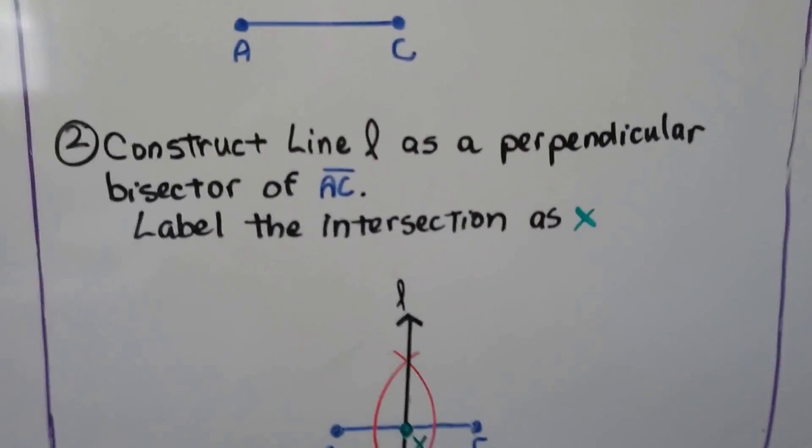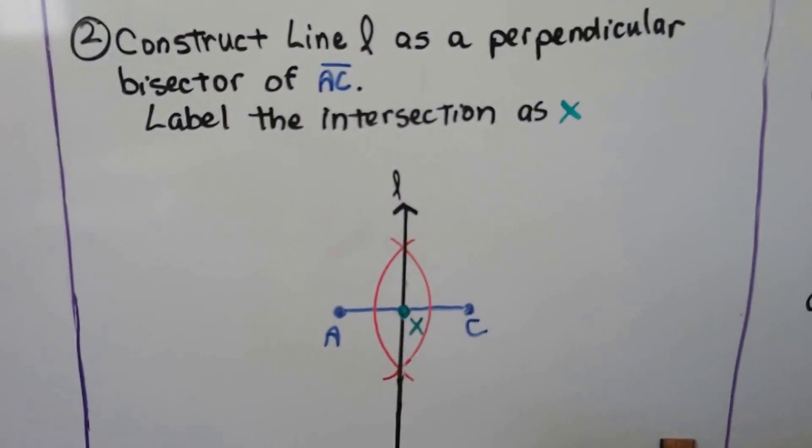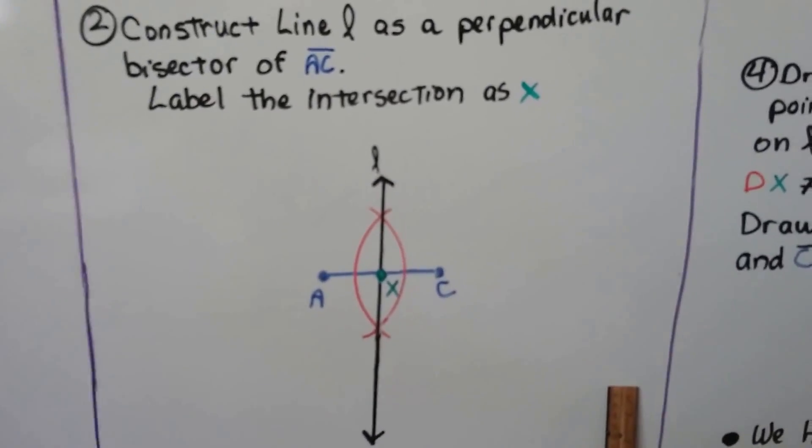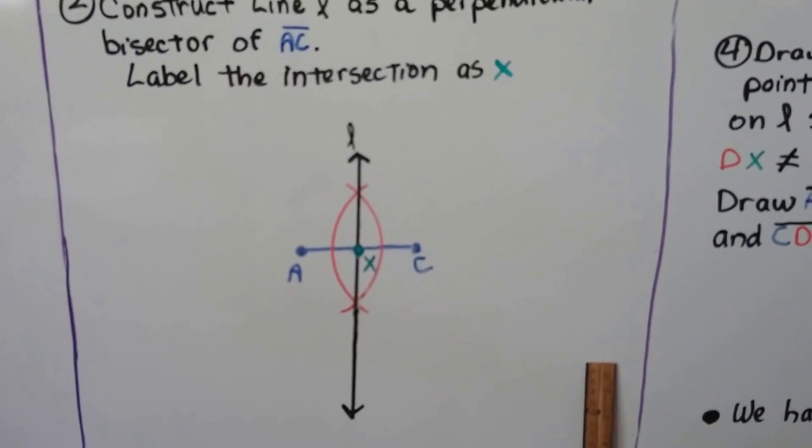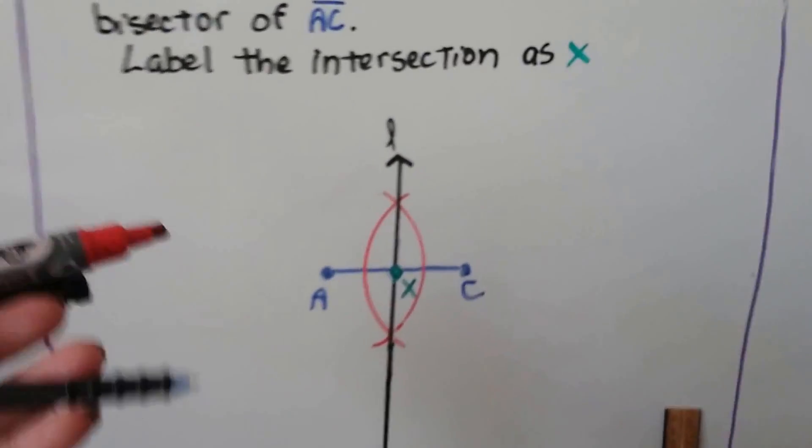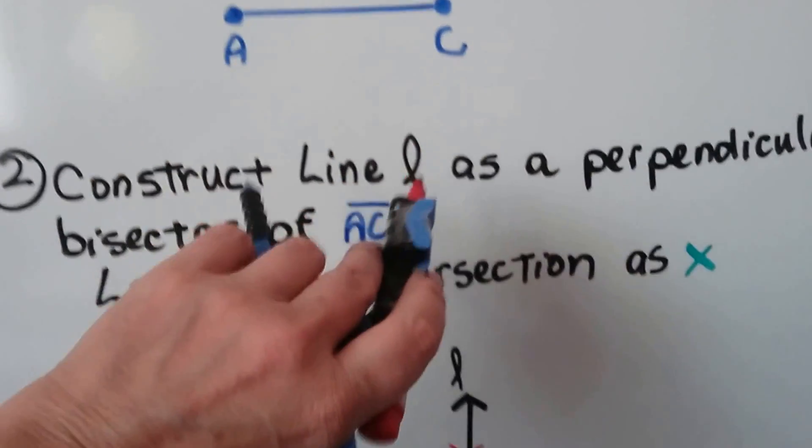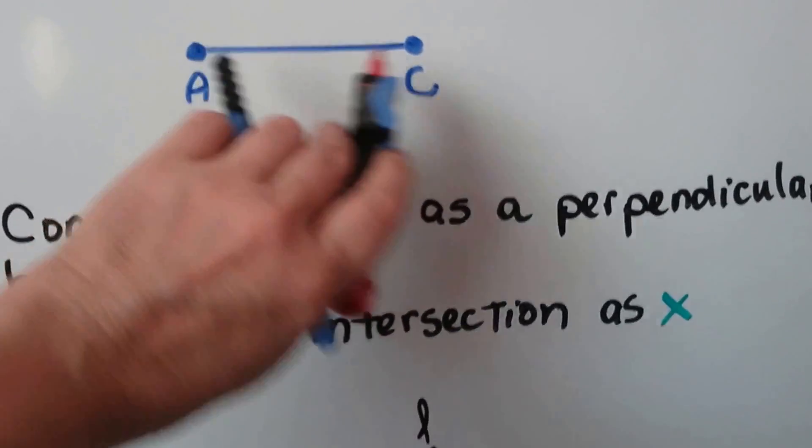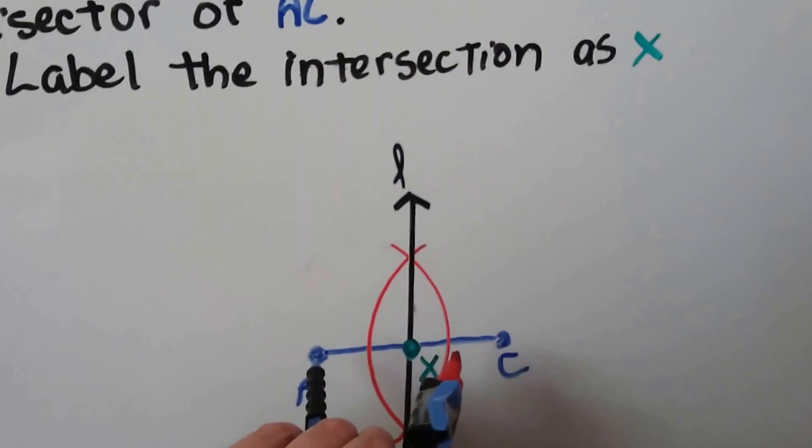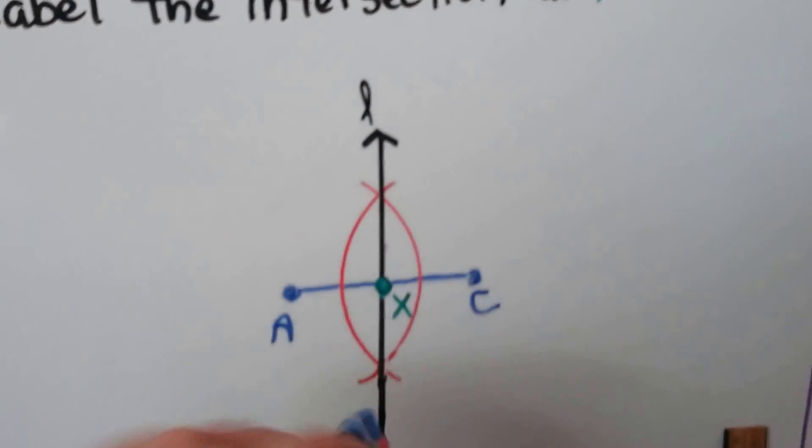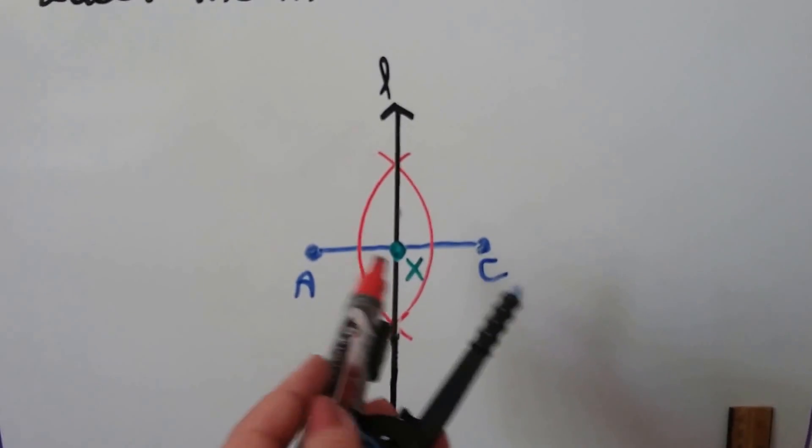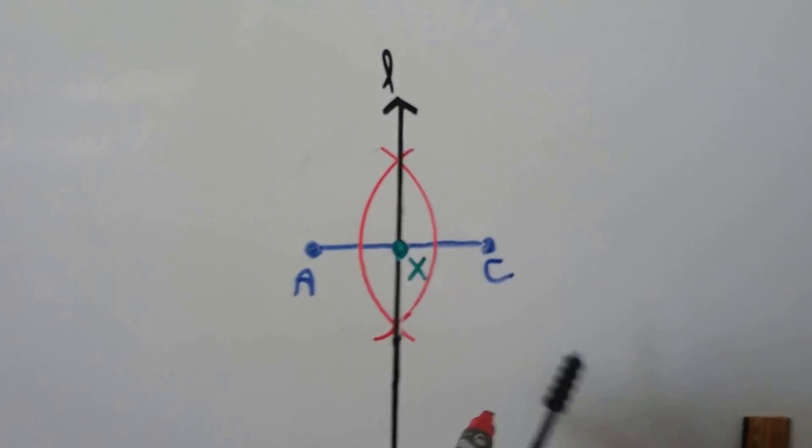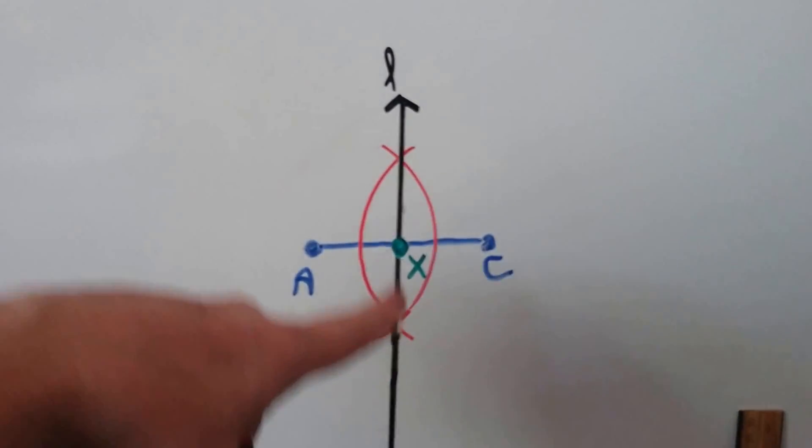Then the next thing we do is construct line L, this black line, as a perpendicular bisector of segment AC. If you don't remember how to do that, we take our compass and make it about two-thirds the length of AC, put it on point A and make an arc. Then we keep the same measure, put it on point C and make an arc.